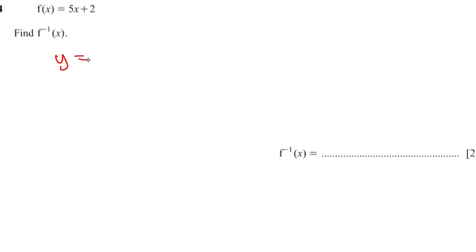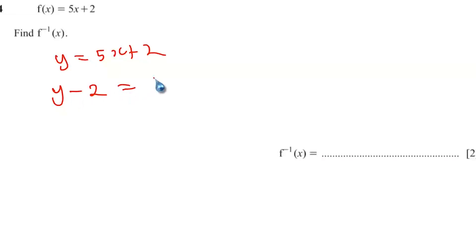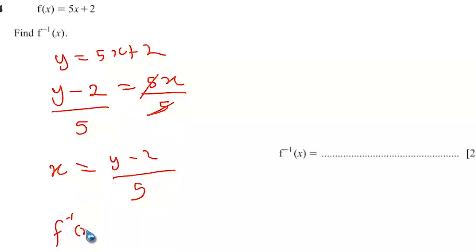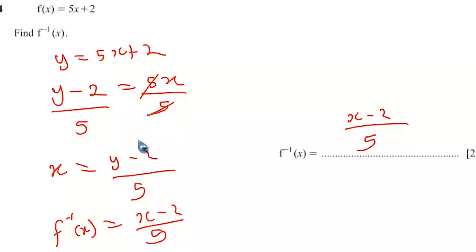So you have y equals to 5x plus 2. Let's make x the subject of the formula. Transfer 2 to the left-hand side: y minus 2 equals to 5x. Then divide both sides by 5. You get x equals to (y minus 2) over 5. Finally, replace x with f inverse of x and y with x. So f inverse of x equals (x minus 2) over 5.